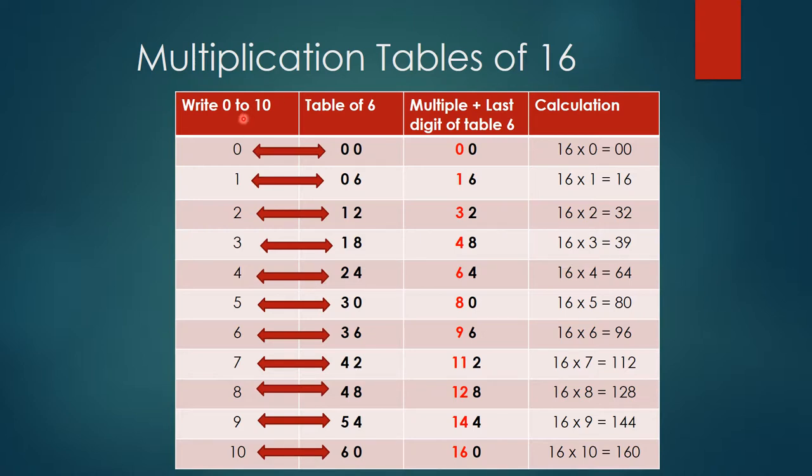Write tables of 1 in the first column. This is nothing but 0 to 10 numbers. Now 1 times 0 is 0, 1 times 1 is 1, 1 times 2 is 2, 1 times 3 is 3, and so on till 1 times 10 is 10.